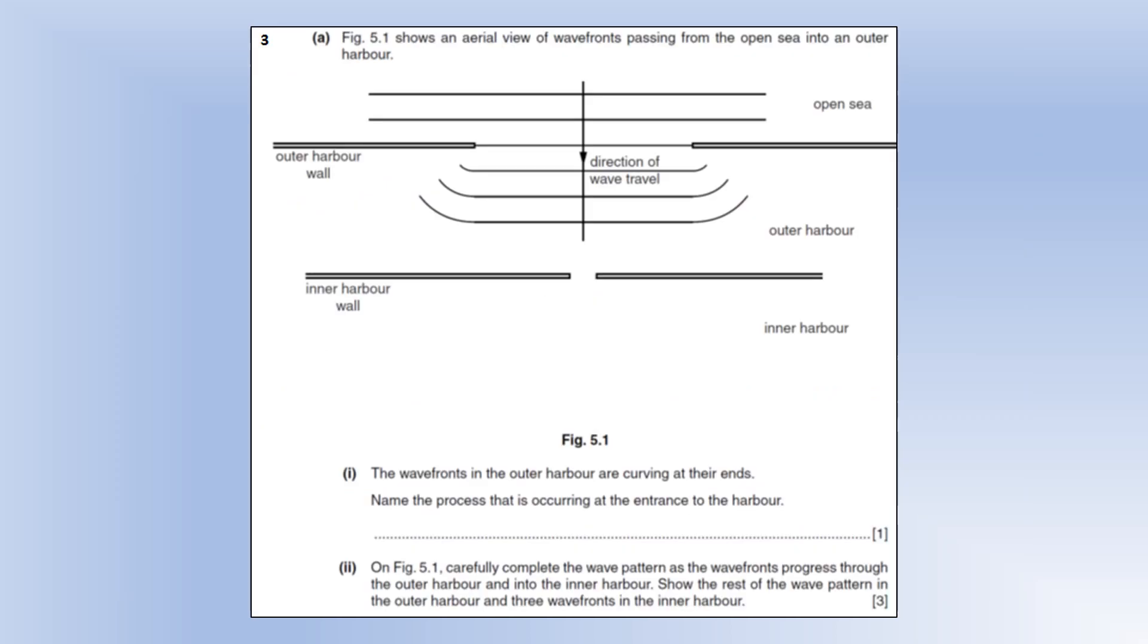Okay, so we've got a wavefront passing from the open sea into an outer harbour. So we've got initially a gap that's much bigger than the wavelength, so you can see the central part of the wave is not diffracted. It's only the edges that get diffracted by the harbour edges. It says name the processes occurring - well it's diffraction, the spreading out of waves when they encounter a gap or an edge. And it says show the rest of the wave pattern, so we've got one more wave front before it hits the next wall, and then the next gap is the similar size as the wavelength, so we're going to get maximum diffraction. We're going to get these semicircular wavefronts coming out.